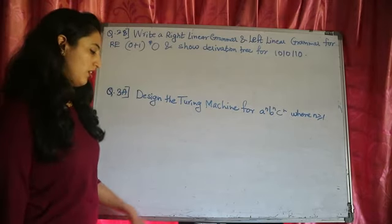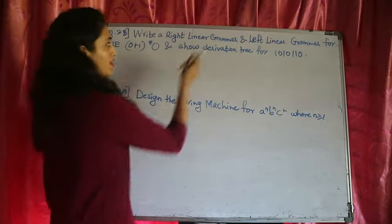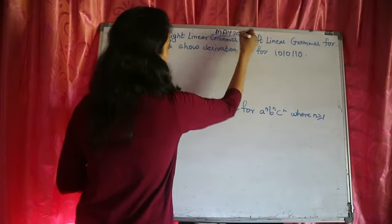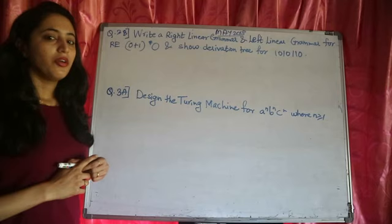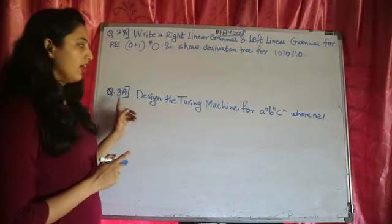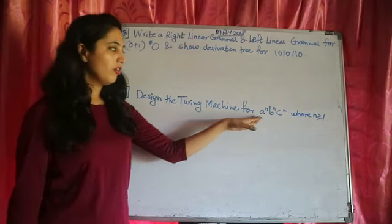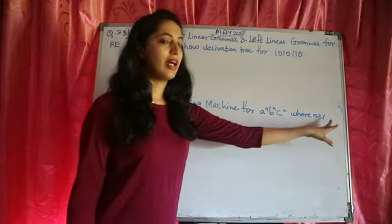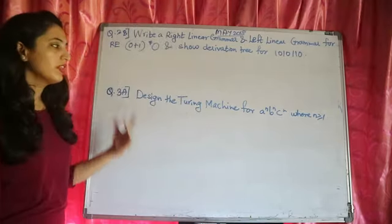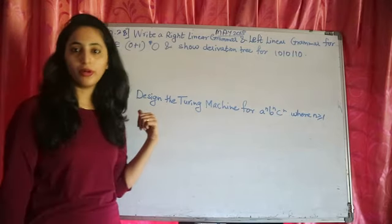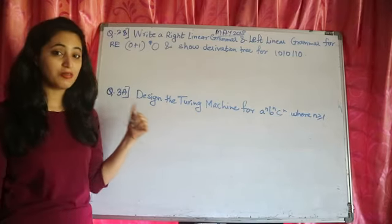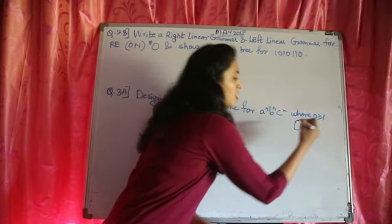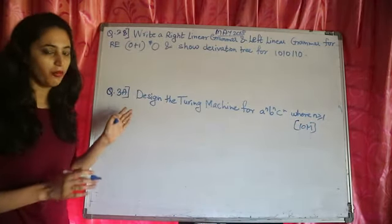Let us continue with the next question. Here, question 3A is: design the Turing machine for A raised to N, B raised to N, C raised to N, where N is greater than or equal to 1. This question is really very important — it has been asked many times in the university exam for 10 marks. So don't miss out this question.